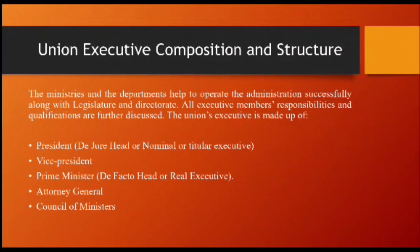What is the composition and structure of the Union Executive? The ministries and the departments help to operate the administration successfully, along with the legislature and directorate. The Union Executive is made of: first, the President, who is the de jure head or the nominal executive head; second, the Vice President; third, the Prime Minister, who is the de facto head or real executive; fourth, the Attorney General; and fifth, the Council of Ministers.